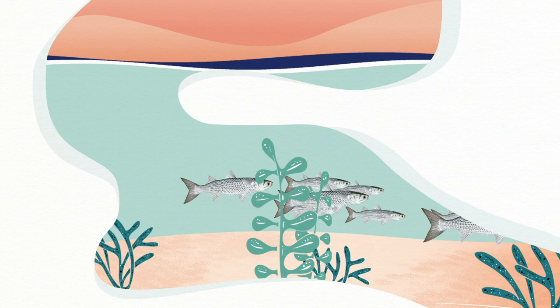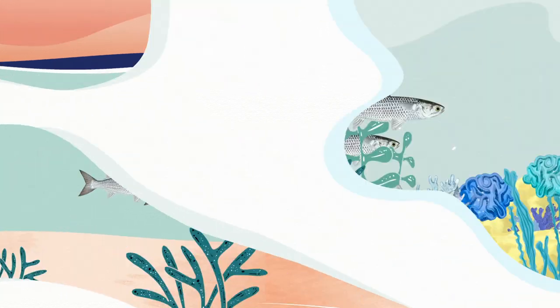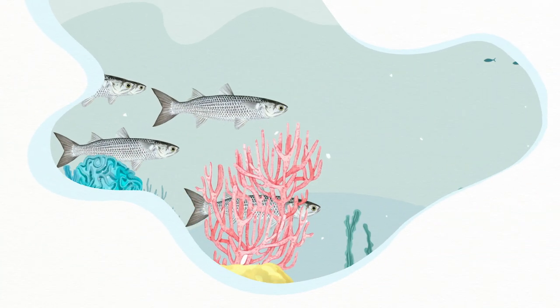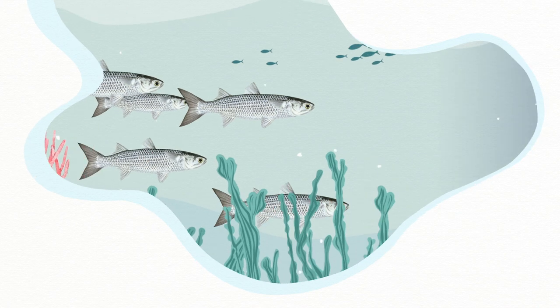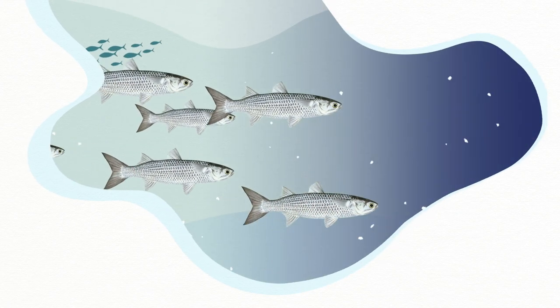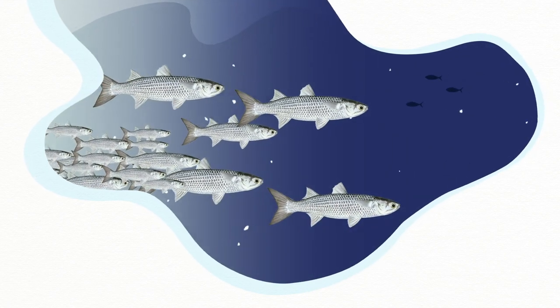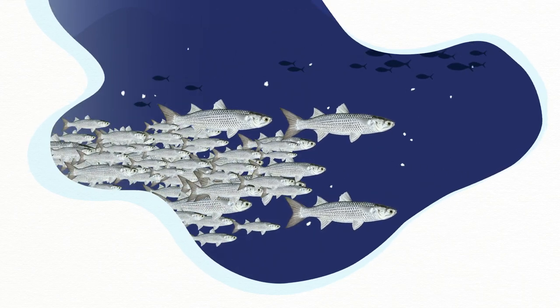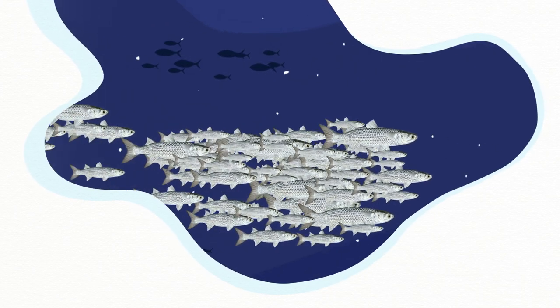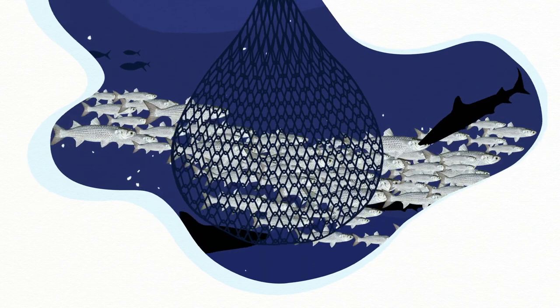Yet they do not stay in one place for long. When it is time to reproduce, the school migrates to reach spawning areas, and on the way, the school gets bigger and bigger. But traveling with friends also makes mullets more noticeable to predators.